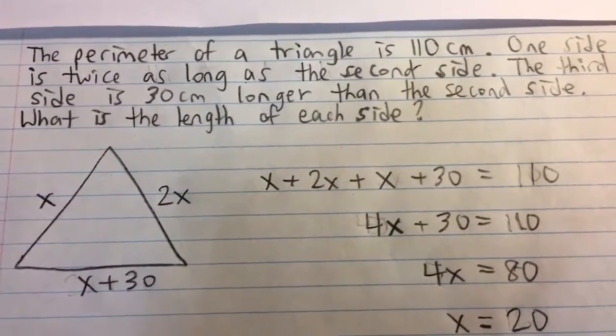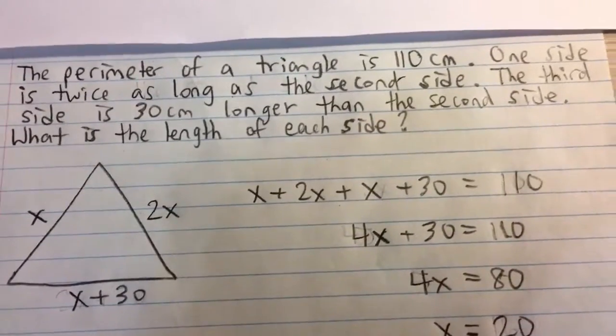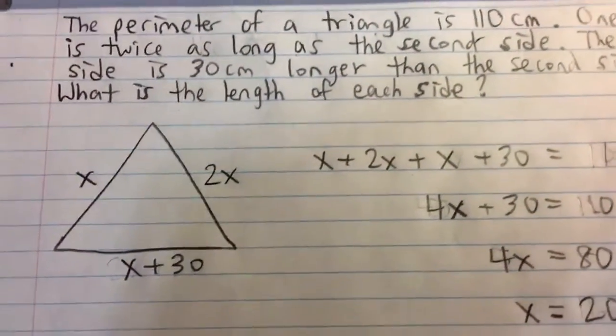The perimeter of a triangle is 110 centimeters. One side is twice as long as the second side. The third side is 30 centimeters longer than the second side. What is the length of each side?